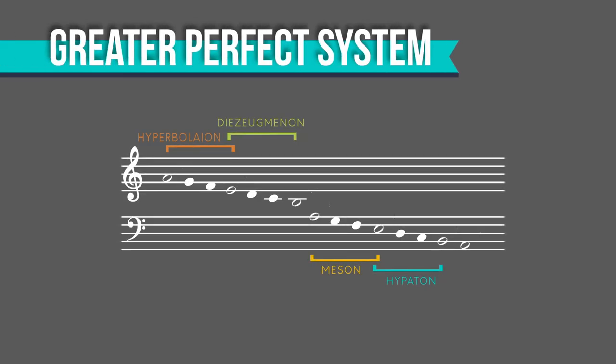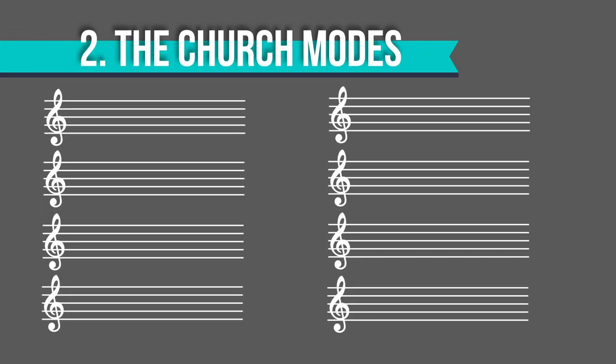This is known as the greater perfect system. Most of the tetrachords are overlapping and are called conjunct, but there is one right in the middle that is separate, and it's called disjunct. In order to complete a two-octave span, they added a lowest note and gave it a really long name. Then, in the ninth century, some Frankish monks rebuilt the scale while working on another project, and came up with eight scales.